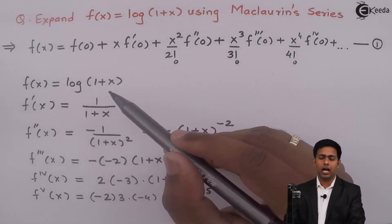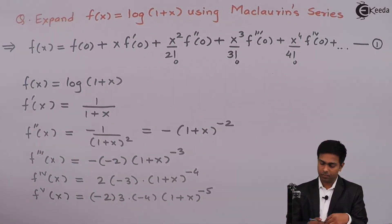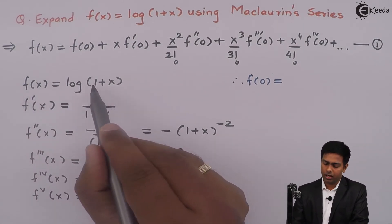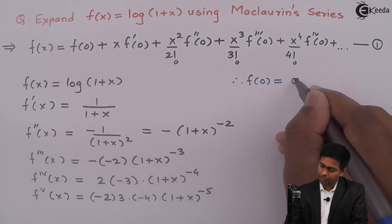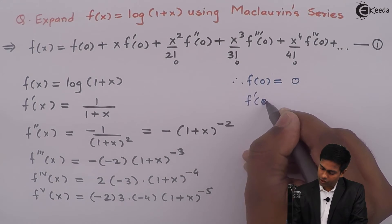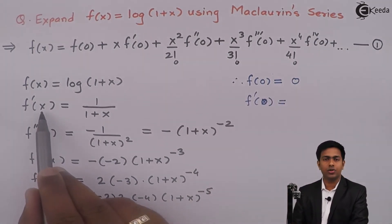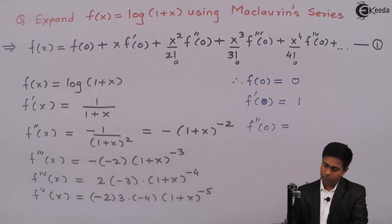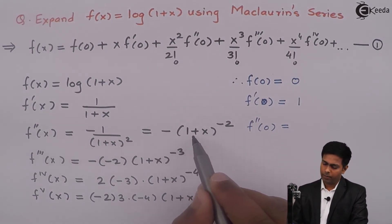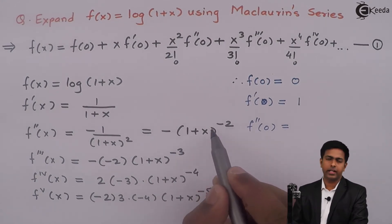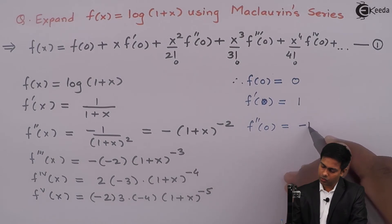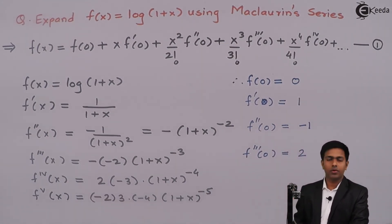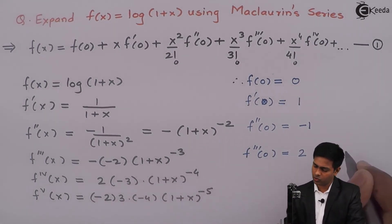Now we find the value of each derivative at x = 0. f(0) = log(1+0) = log(1) = 0. f'(0): substituting x = 0 gives 1/(1+0) = 1. f''(0): substituting x = 0 gives −1/(1+0)² = −1. f'''(0): we get −(−2) = 2, and (1+0)³ = 1, so f'''(0) = 2.